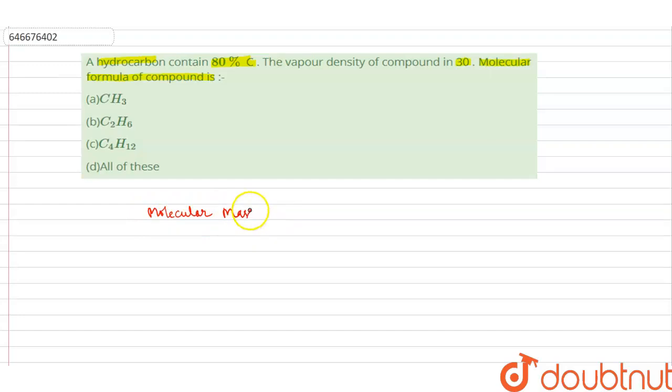Molecular mass equals 2 times vapor density. So from here, we will calculate the molecular mass of the hydrocarbon.